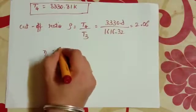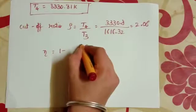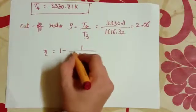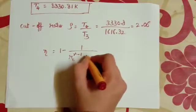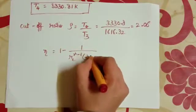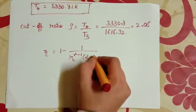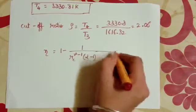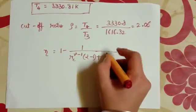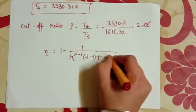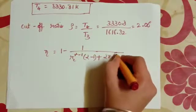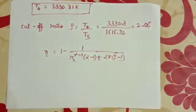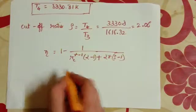Thermal efficiency is 1 minus 1 by RC raised to gamma minus 1, times alpha rho raised to gamma minus 1, divided by alpha minus 1 plus alpha gamma into rho minus 1.